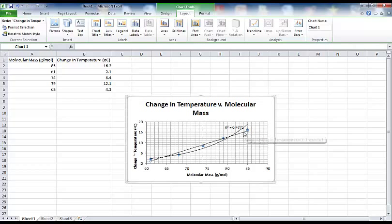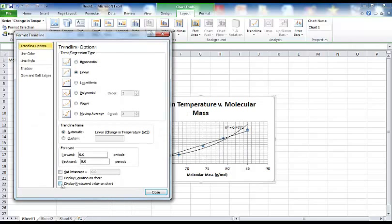So I'm also going to select the linear trend line, format the data, display R squared value. Also other choices that we have here, display the equation, which is useful because if you have a Y equals MX plus B, you can extrapolate going past your graph in order to predict what a molecular mass might be, a change in temperature for a molecular mass of 90 or 100.